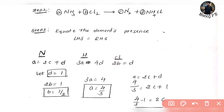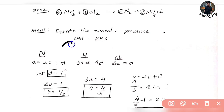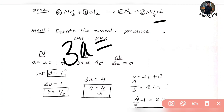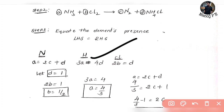Next, hydrogen. Hydrogen on LHS: NH3 has 3 hydrogen, so 3 times A, which is 3A. On RHS, NH4Cl has 4 hydrogen, so 4 times D. The hydrogen equation is: 3A = 4D.